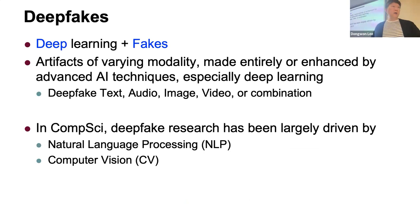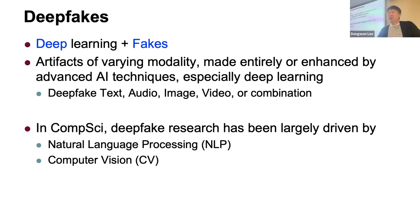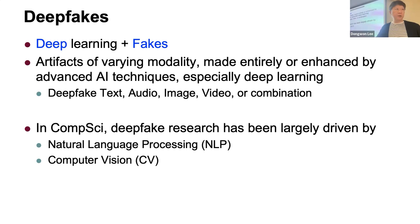We've all heard the term deep fakes — it's roughly an acronym combining deep learning and fakes. It refers to any artifact made by or substantially enhanced by AI techniques, especially deep learning. It comes in all different forms: text, images, audio, video, or even hybrids. Within computer science, we've seen a lot of advancement in two sub-communities — NLP for text, and computer vision or computer graphics for multimedia deep fakes.